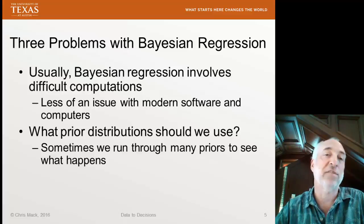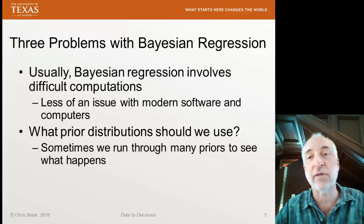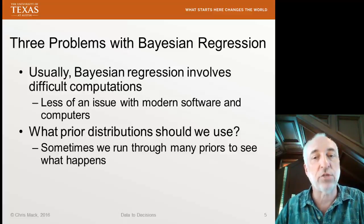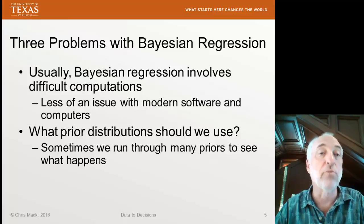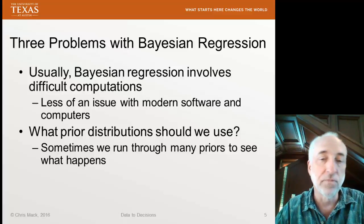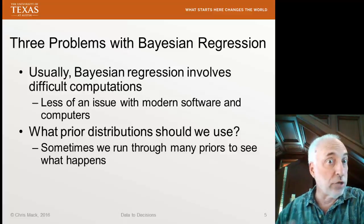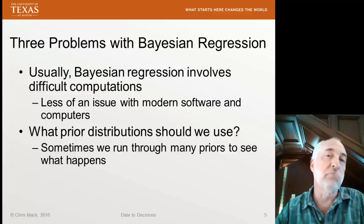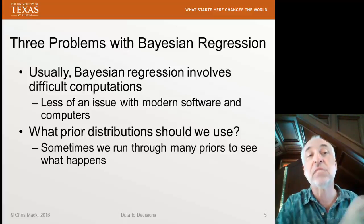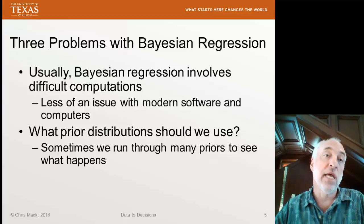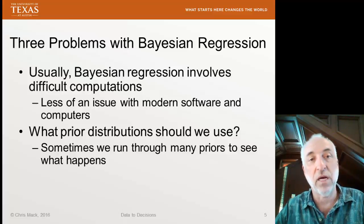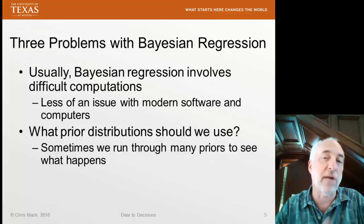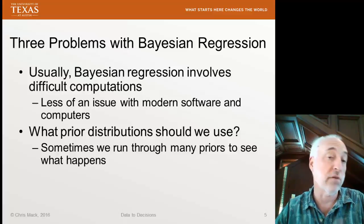The most difficult aspect, in my opinion, is figuring out the best prior distributions to use. It's not always clear how changes in the prior distribution will affect the output, and therefore how important it is to specify these prior distributions properly. It's sometimes hard to take our prior knowledge and turn it into numerical assignments of probabilities. Sometimes what we do is try different priors to see how sensitive our output is to the choice of priors. If we have a lot of data, we become less dependent on the prior assignments; with less data, the priors become more and more important.